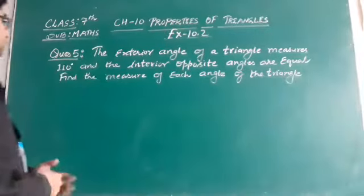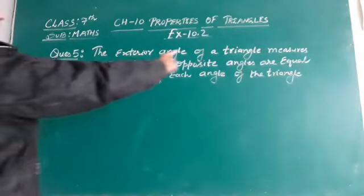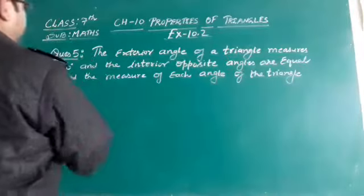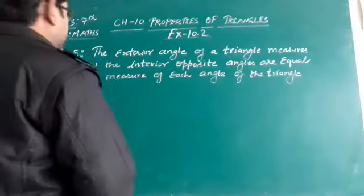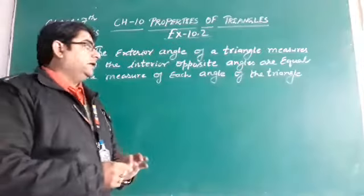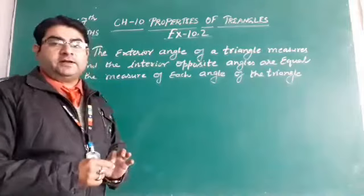Let us study. The question is, the exterior angle of a triangle measures 110 and the interior opposite angles are equal. Find the measure of each angle of the triangle. We have to calculate the measure of each equal interior angle, and the exterior angle is given 110.